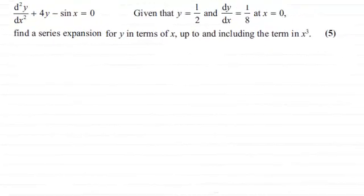Hi there. Now for this question we're given that d²y/dx² + 4y - sin x = 0. And given that y = 1/2 and dy/dx = 1/8 at x = 0, we've got to find a series expansion for y in terms of x up to and including the term in x³ for 5 marks.